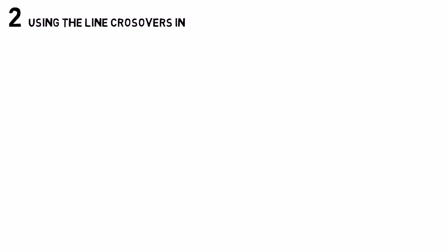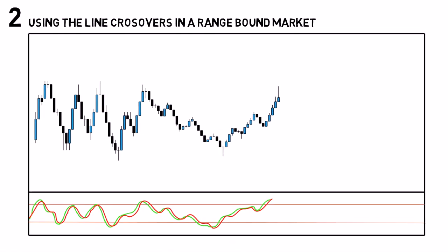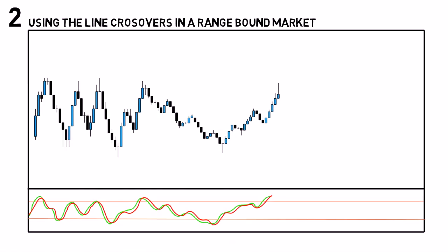Using the line crossovers in a range-bound market: in a range, we buy when the K line crosses above the D line, and we sell when the K line crosses below the D line.